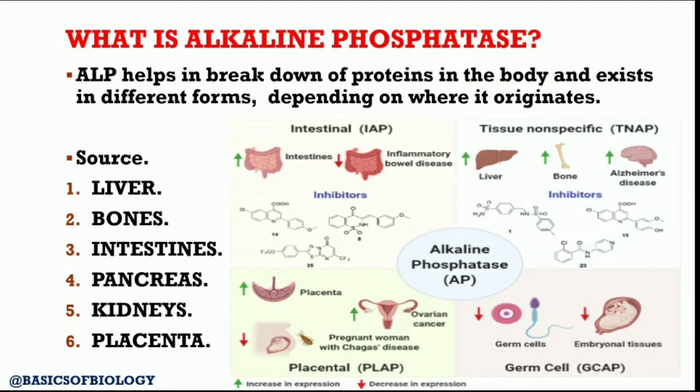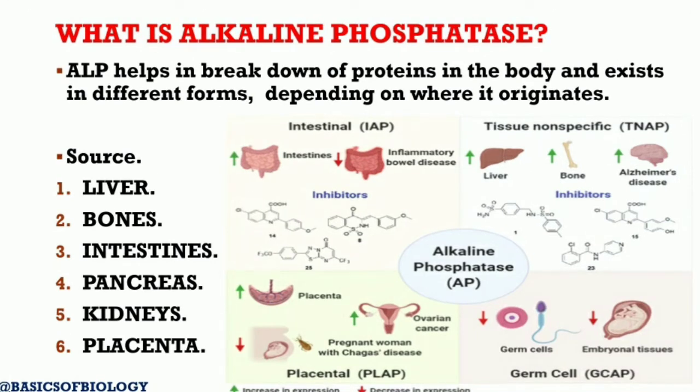Alkaline phosphatase is an enzyme found in your bloodstream. It helps break down proteins in the body and exists in different forms depending on where it originates. Your liver is one of the main sources of alkaline phosphatase, but some is also made in your bones, intestine, pancreas, and kidneys. In pregnant women, alkaline phosphatase is also made in the placenta.